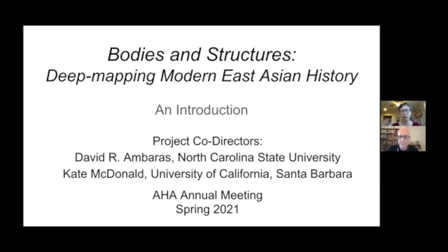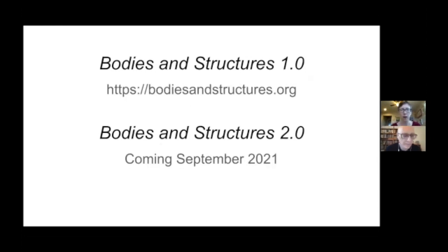Following the presentations from our three panelists, we will return with more discussion about what you can actually do with this site. The URL for Bodies and Structures 1.0 is bodiesandstructures.org. We are currently putting together a second edition of the site, which we hope to release in September 2021 with significant funding from the National Endowment for the Humanities. Today you'll see materials from both 1.0 and 2.0, which is not yet public.